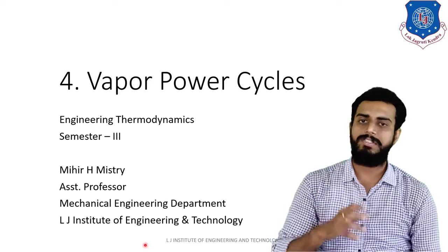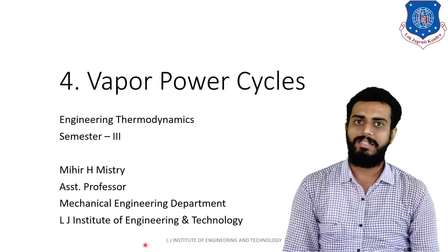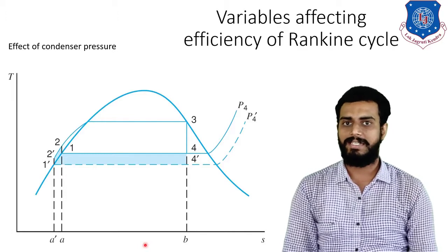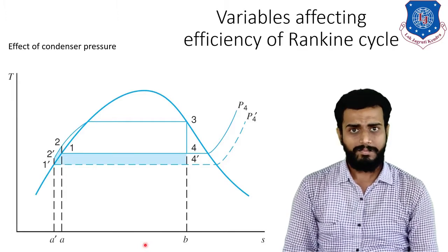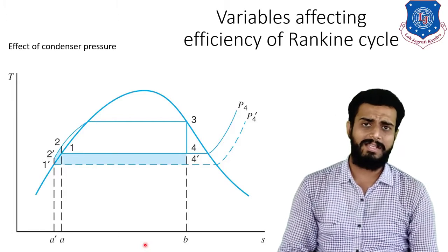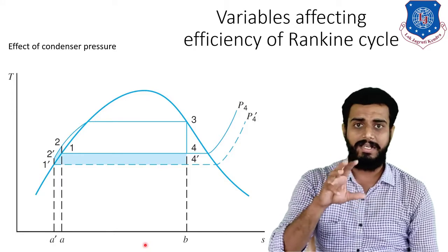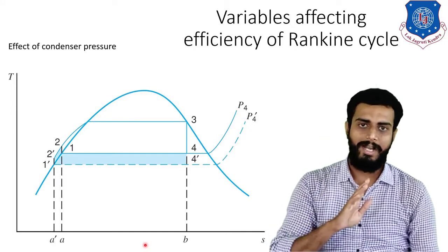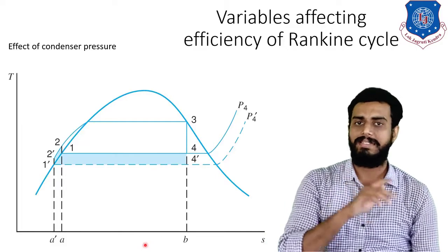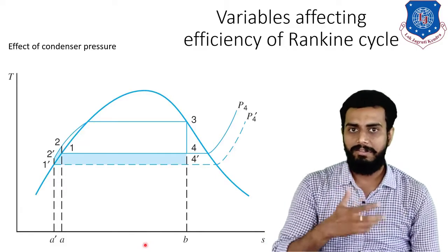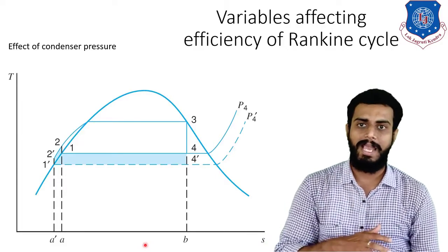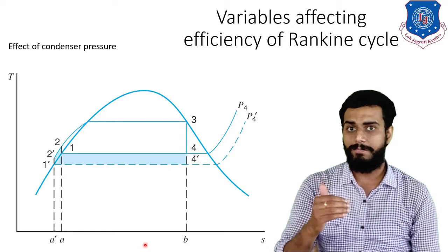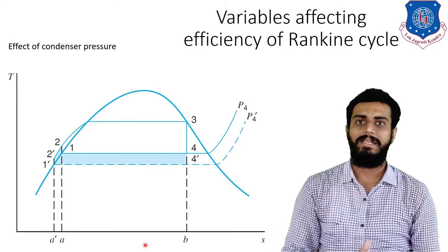First is condenser pressure. To understand this, we are drawing a TS diagram as shown on the screen. In this TS diagram, the normal Rankine cycle is represented by 1-2-3-4, and the revised Rankine cycle is represented by 1'-2'-3-4'. Let us understand what we are supposed to do here.